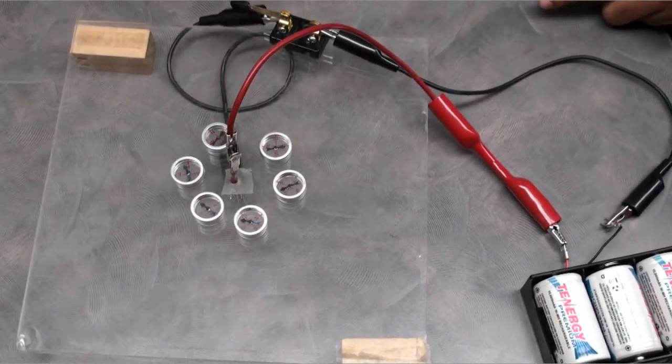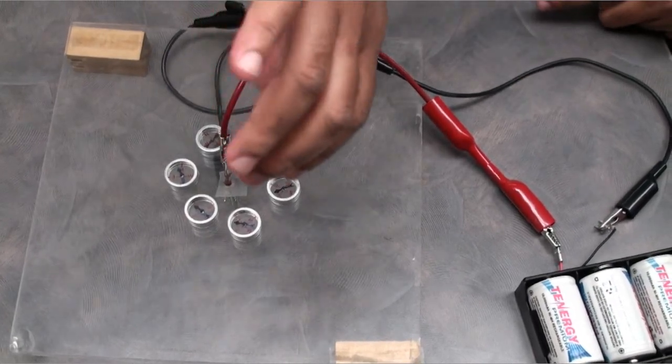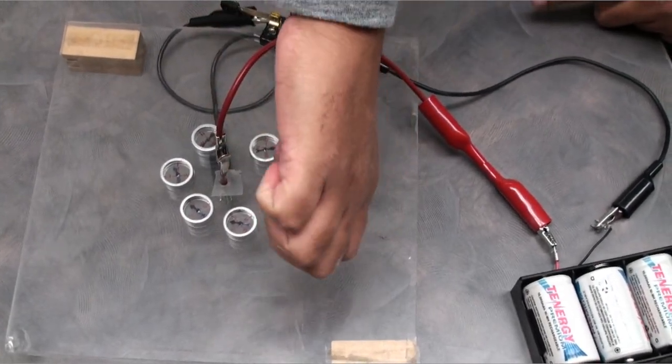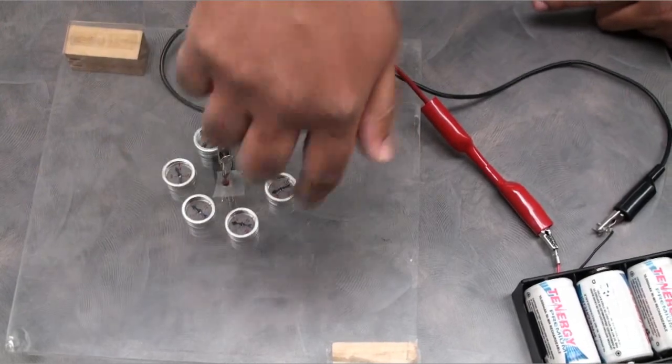So if you use the right-hand thumb rule, then you should see that magnetic field goes in this direction.